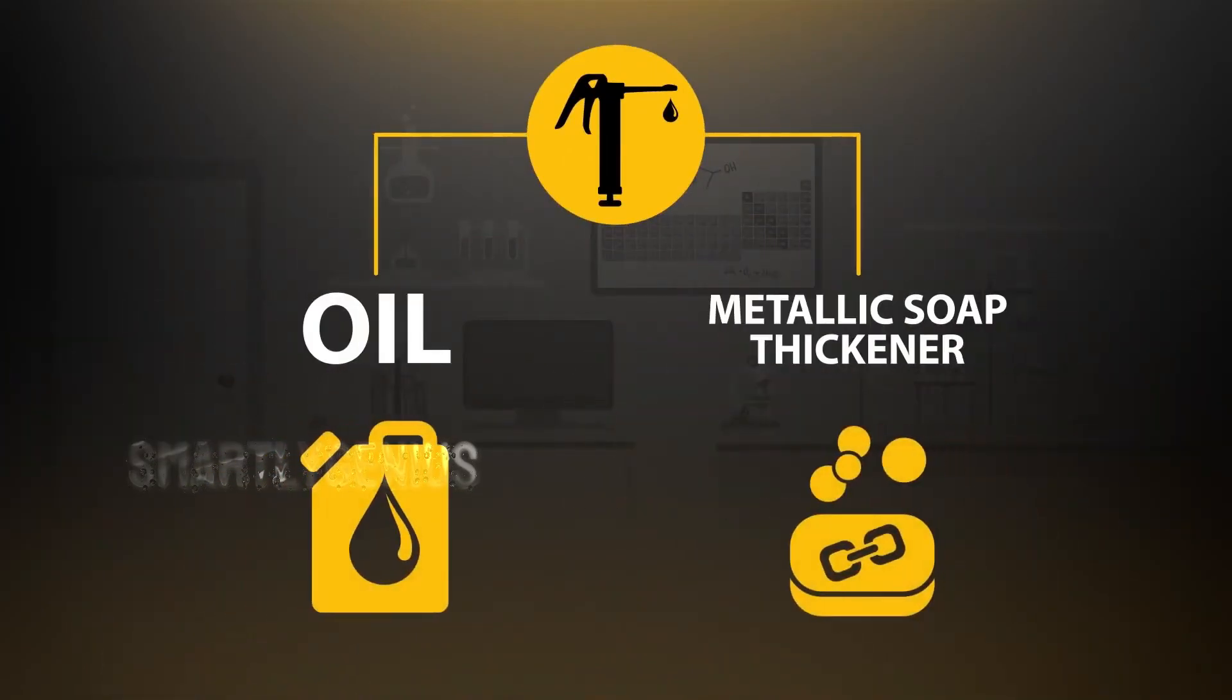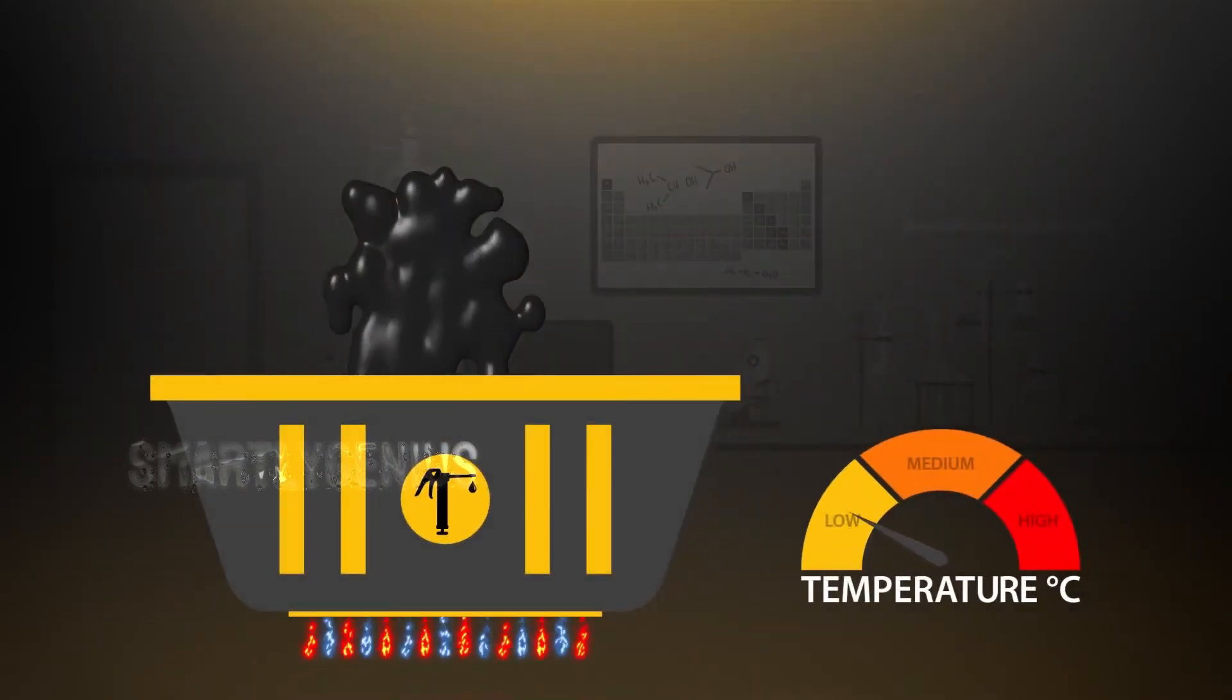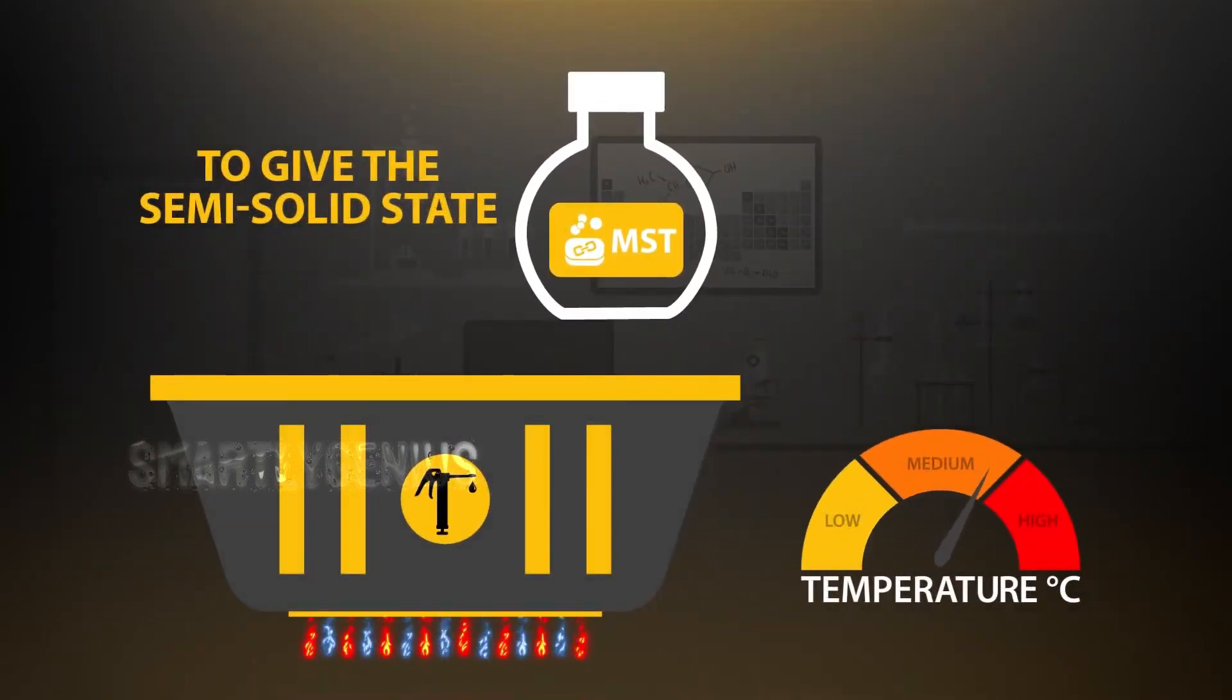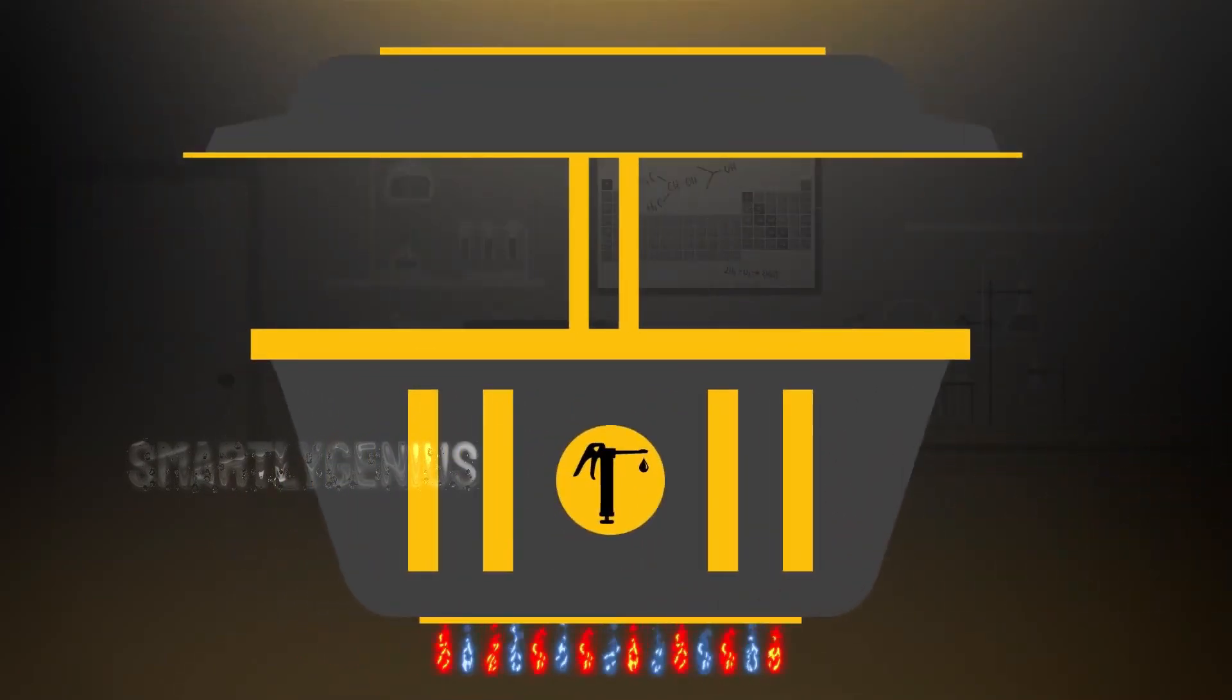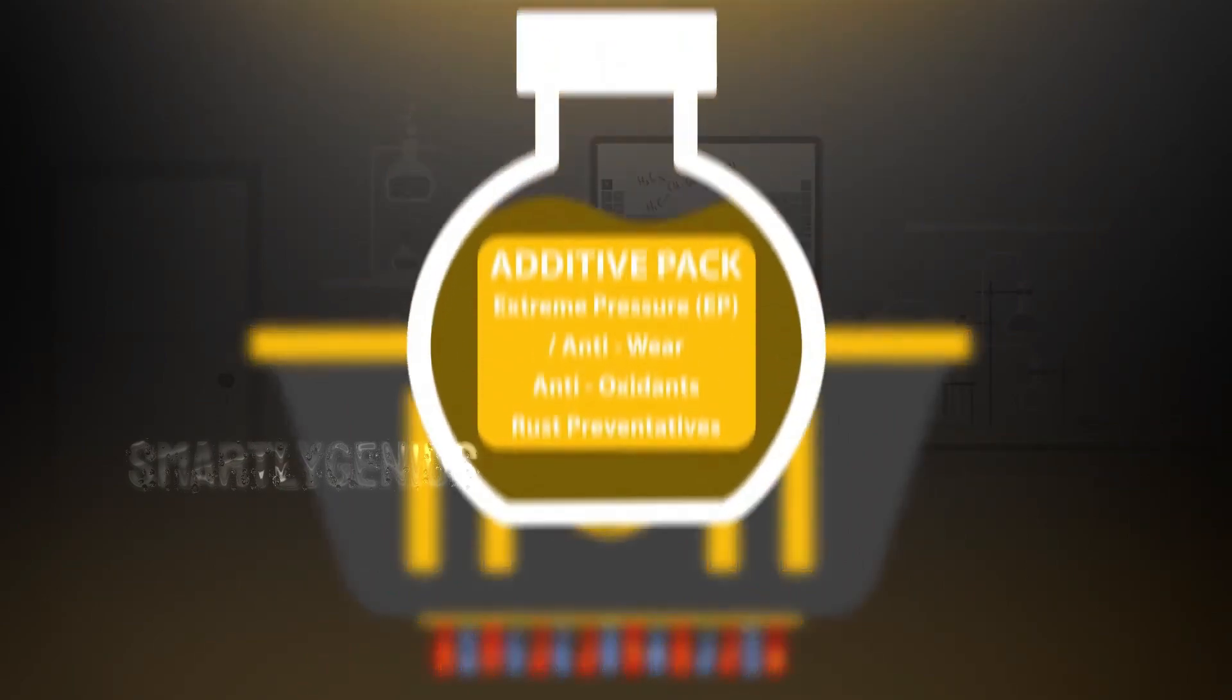and a metallic soap thickener. Here's how it works: Oil is heated in large vats, and the metallic soap thickener is added at a specific temperature. This mixture is then blended and sheared into the oil to enhance performance for specific applications.